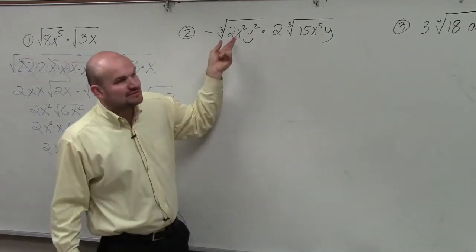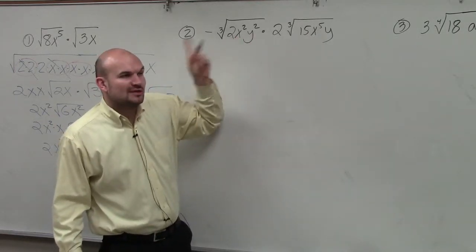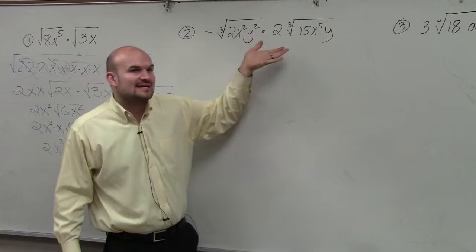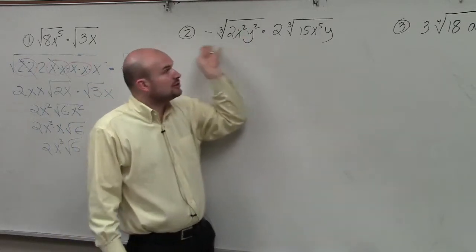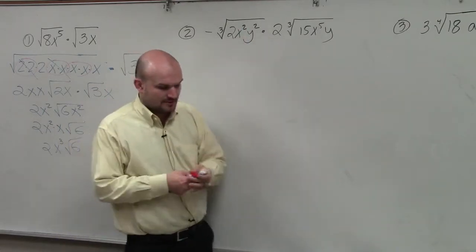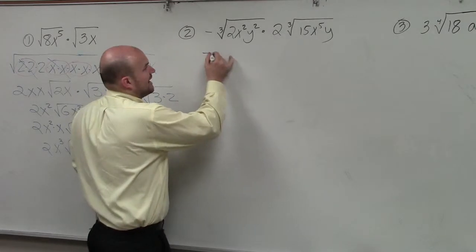Well, I can't break down 2. Obviously, x squared is only x times x, y squared is only y times y. So I can't take the cube root of anything over here. So I'm just going to rewrite it as is.